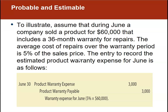These sales include a 36-month warranty for repairs. The average cost of repairs over the warranty period is 5% of the sales price. The entry to record the estimated product warranty expense for June: product warranty expense is debited for $3,000, and we set up a liability — product warranty payable — for $3,000. At some point over the next three years, these products sold in June for $60,000 are going to incur estimated warranty expense of 5% of sales. 5% of $60,000 is $3,000.